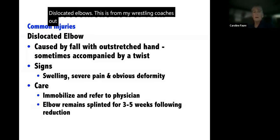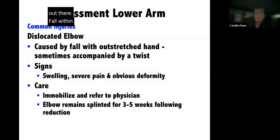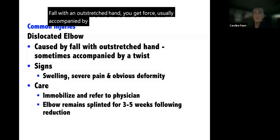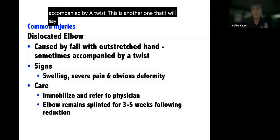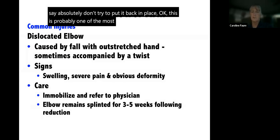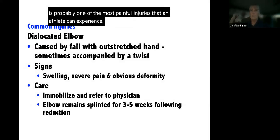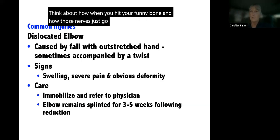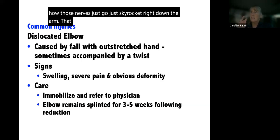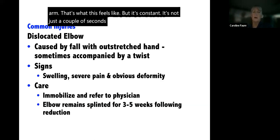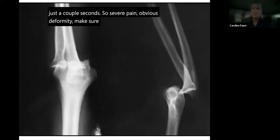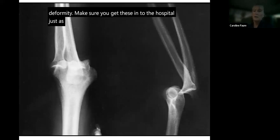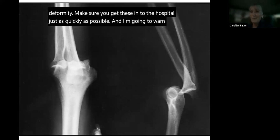Dislocated elbows — common in wrestling — occur from a fall with an outstretched hand, usually accompanied by a twist. Absolutely do not try to put it back in place. This is probably one of the most painful injuries an athlete can experience — think about hitting your funny bone and those nerves firing down your arm, but constant instead of just a couple of seconds. Severe pain, obvious deformity — get them to the hospital as quickly as possible.